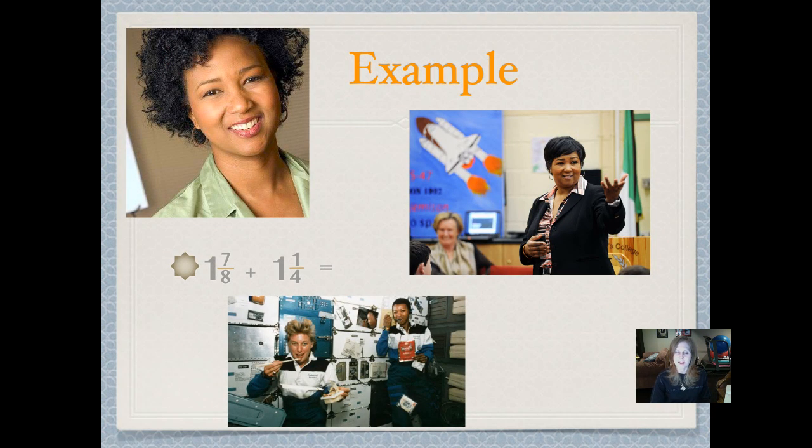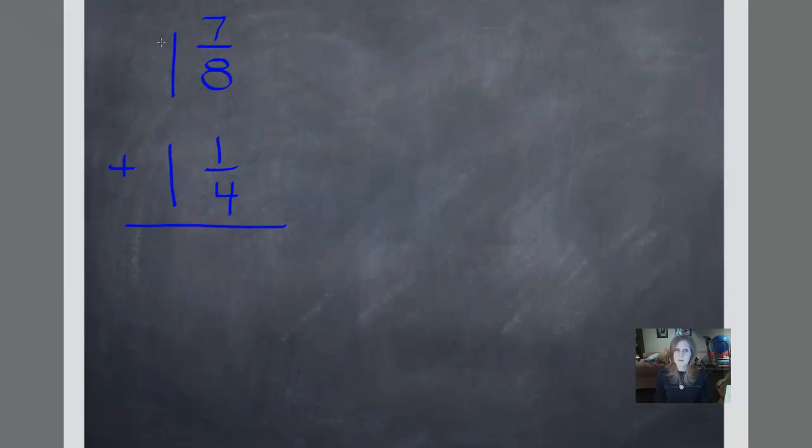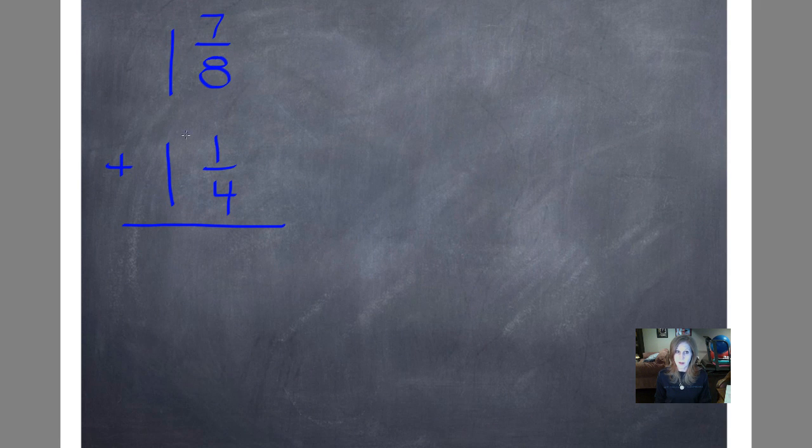Here is our example. I love that picture of Mae Jemison up there in the corner. And that picture below was on 10 tips on how astronauts eat food. So they're eating in space. You can see that they're kind of floating around. Our first problem is 1 and 7 eighths plus 1 and 1 fourth. Let's go ahead and try that now.